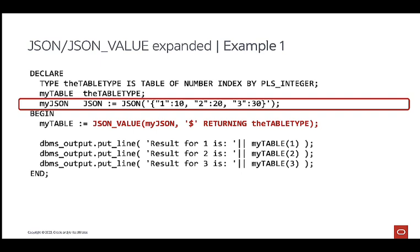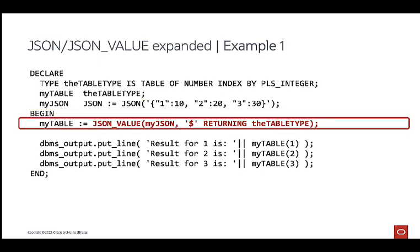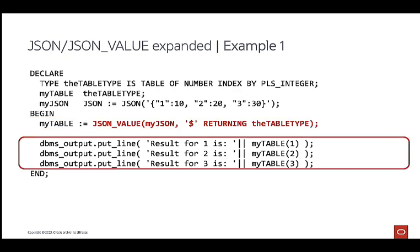JSON data stored in a JSON data type is stored in a different way compared to a CLOB or VARCHAR2, and is extremely performant when accessing individual values in the object, specifically in large objects. It is also guaranteed that a value stored in a JSON type column or variable is a valid JSON object. While declaring my JSON variable, I put the plain text JSON data in there — an array of three values: 10, 20, and 30. Using JSON value, I extract the individual values from the single JSON string and store them in my variable called myTable. There is no additional code or programming needed, as long as the JSON string contains the correct number of fields compared to the table type. In the DBMS output section, I show the individual elements in my variable.